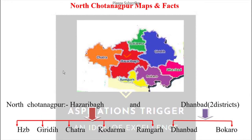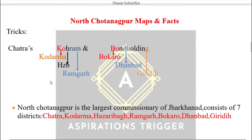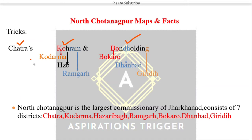Now I come to North Chhota Nagpur. As I bring a trick for every district and division, here too I have a trick. North Chhota Nagpur has a total of seven districts. How to remember them? Through this trick: 'Chatra's Kohram and Bond Holding.' 'Bond holding' means keeping a bond in a bank as security for payment at a fixed time — the person holding it is a bond holder. So: Chatra's Kohram — K for Koderma, H for Hazaribagh, Ram for Ramgarh, and Chatra itself — that gives four districts. Then Bond Holding — B for Bokaro, Dh for Dhanbad, G for Giridih — giving three more.